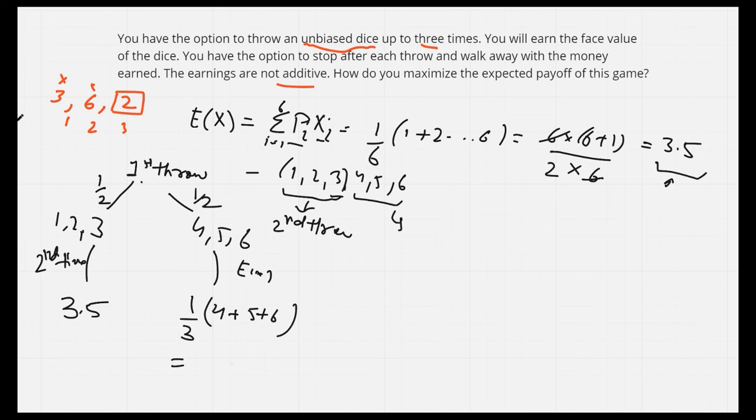So what is the expected payoff? E(2) = 1/2 × 3.5 + 1/2 × 5 = 4.25. So this was for two dice throws. Now I need to find it for three dice throws. So now how do we decide on the first throw?